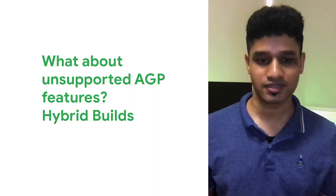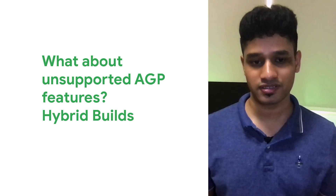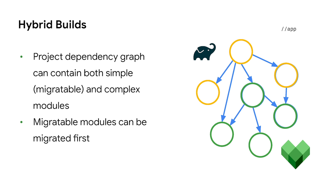While this works for simple applications, what about unsupported Android Gradle plugin features that might require refactoring? Our solution to this problem is what we call hybrid builds. Hybrid builds work on the premise that a large project's module dependency graph can contain a variety of modules ranging from simple Java or Kotlin library to advanced Android libraries. Among these modules, some simple modules can be safely migrated to Bazel. Grazel can scan the dependency graph of a project and find such modules by performing a compatibility check and then generates Bazel build scripts for them. Once build scripts are generated, these modules can be built with Bazel, while the rest of the unmigrated modules can be built with Gradle.